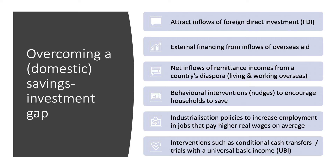On the domestic front, governments might try behavioral interventions and behavioral nudges to encourage people to save. More generally, in the long term, you need industrialization strategies to move output towards higher value-added industries where real wages on average are higher — because if you can lift per capita incomes, people have a greater potential ability to save. Some countries are also trialing interventions such as conditional cash transfers, giving households cash conditional on meeting certain targets such as immunization of children.